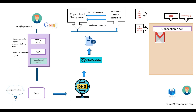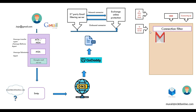The connection filter then validates the connecting IP address against the IP reputation list, which is maintained and updated by Microsoft. This list is a database of well-reputed IP addresses updated on a regular basis. If the IP address of the sending mail server cannot be found in the reputation list, a value called IPvnli is added to the email header, indicating that the connecting IP address was not found within the IP reputation list.